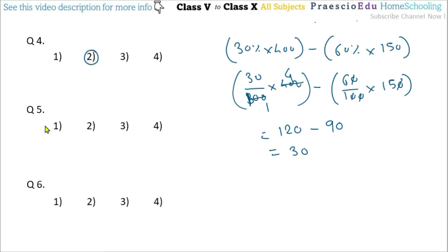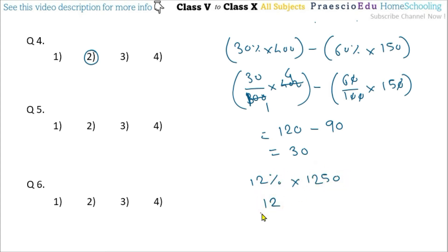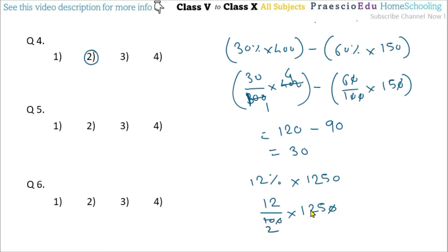Question number 5: 12% of 1250. So 12 divided by 100 multiplied by 1250. After cancelling zeros, we get 6 multiplied by 25 equals 150. The answer is 150, given in option number 3.